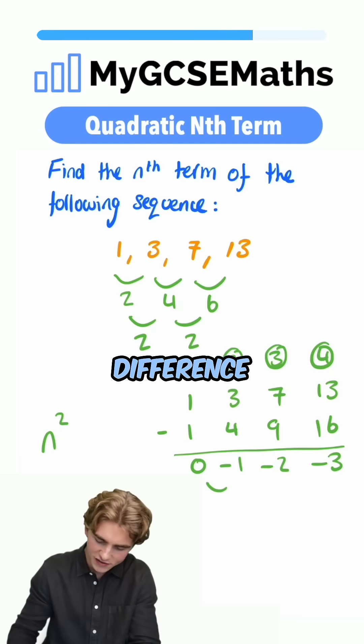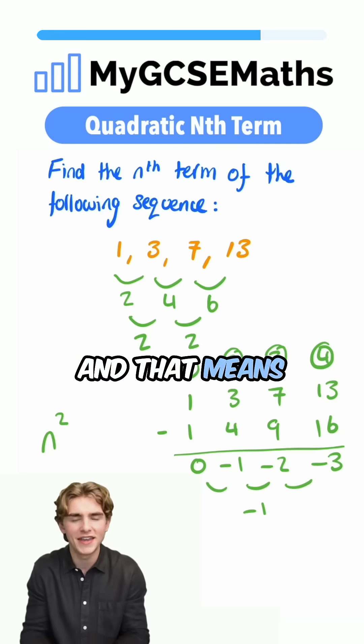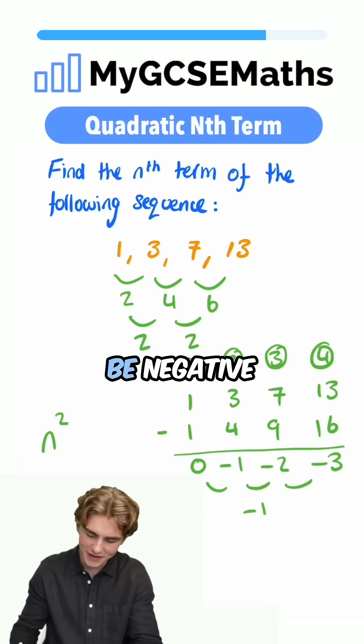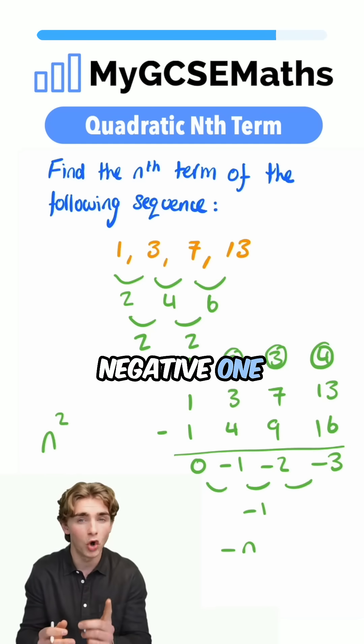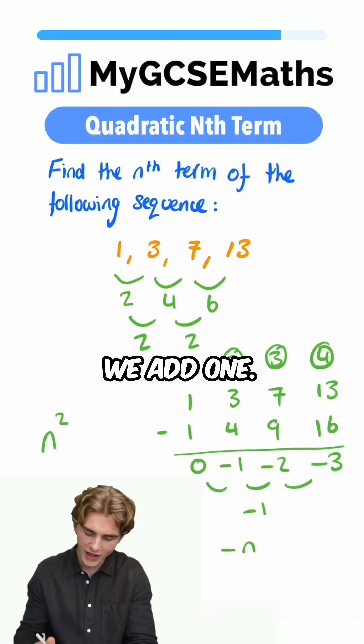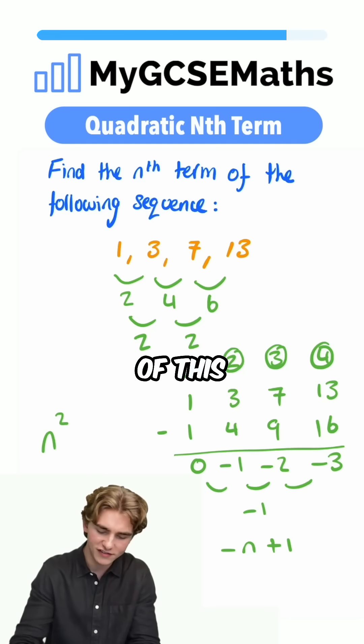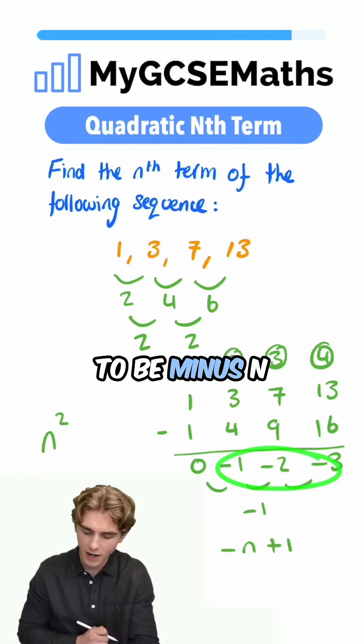Well, our common difference here is negative 1, and that means that the coefficient of n is going to be negative 1, so we have negative n, and then how do we get from negative 1 to our first number? We add 1, so our nth term of this sequence here is going to be minus n plus 1.